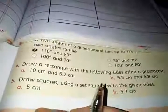Question number five is draw squares using set squares with the given sides. Here we can use set squares to draw the square and we can also use a ruler.